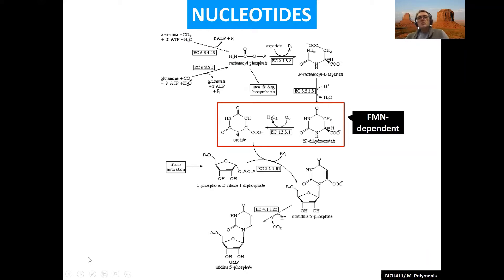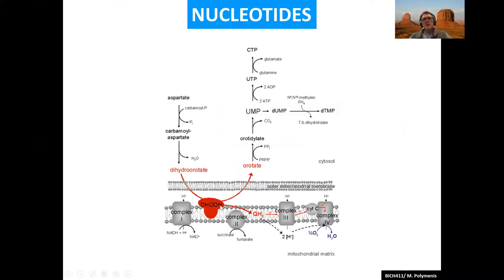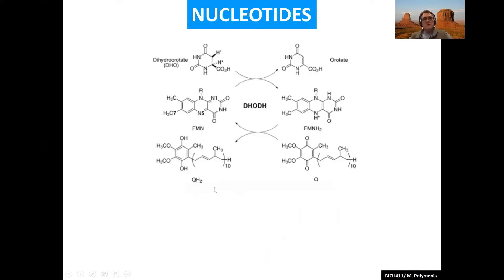The next enzyme has to oxidize this cyclic molecule — it abstracts electrons and makes a double bond. Interestingly, this enzyme sits in the inner mitochondrial membrane facing outward, so dihydroorotate can come in from the outside. It is acted upon by the enzyme and generates orotate. The electrons removed from dihydroorotate are fed into the electron transport chain — they are passed on to Q, reducing it. So this is actually an input into the electron transport chain, and it is an essential step for pyrimidine biosynthesis.